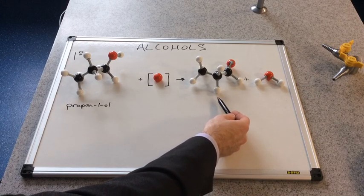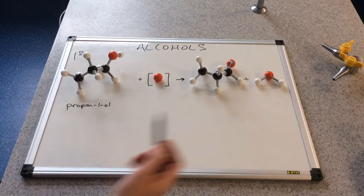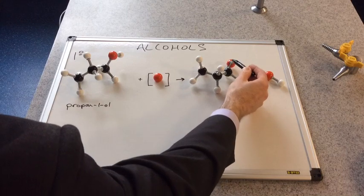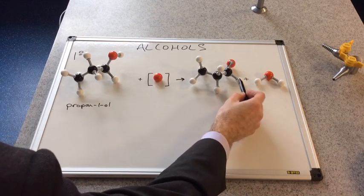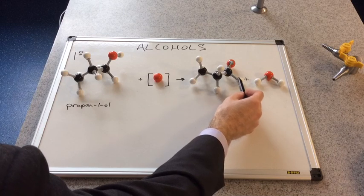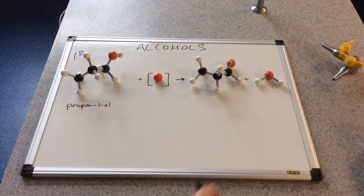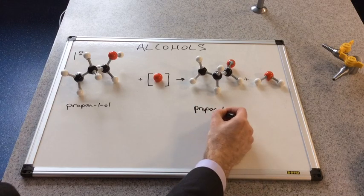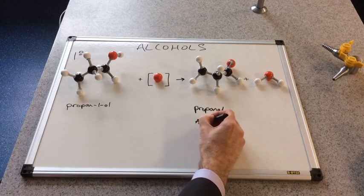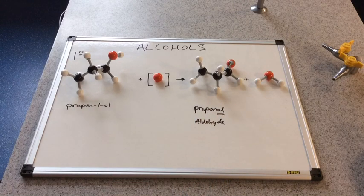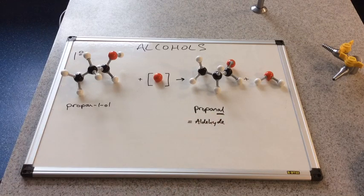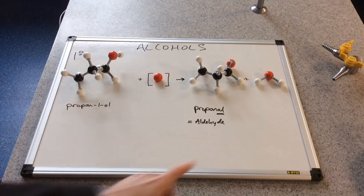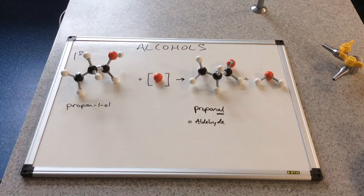Heat this up and our first oxidation product would be this molecule here. If we have a look at the functional group on the end, we have a C double bond O, and also bonded to this carbon is a hydrogen. So this is called propanal, and this is an example of an aldehyde. You can see we've also produced a water molecule.